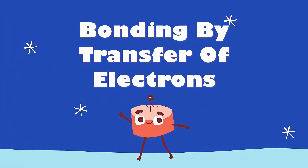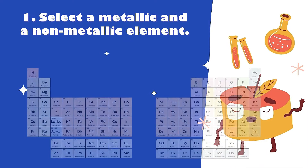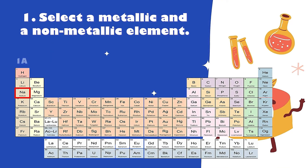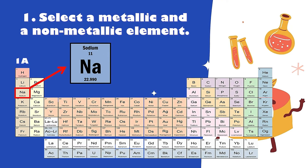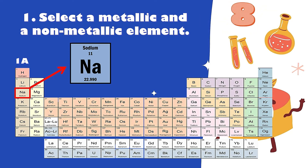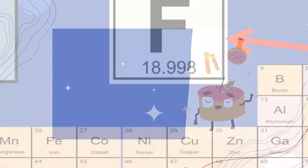Let's discuss the steps in bonding by transfer of electrons. First, select a metallic and a non-metallic element. For example, sodium — sodium is under group 1A, so it has 1 valence electron, and its atomic symbol is Na. Following the octet rule, it needs 8 valence electrons to become stable, so we pair sodium from group 1A with an element from group 7A. Let's choose fluorine.